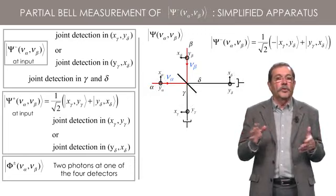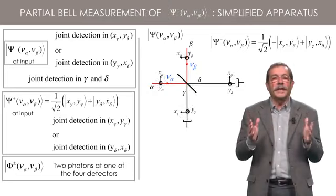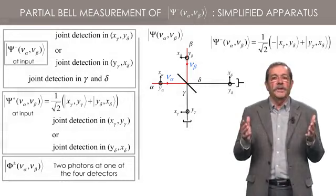In fact, to detect the psi-minus component in the input space, it suffices to use one detector in each output channel of the beam splitter.